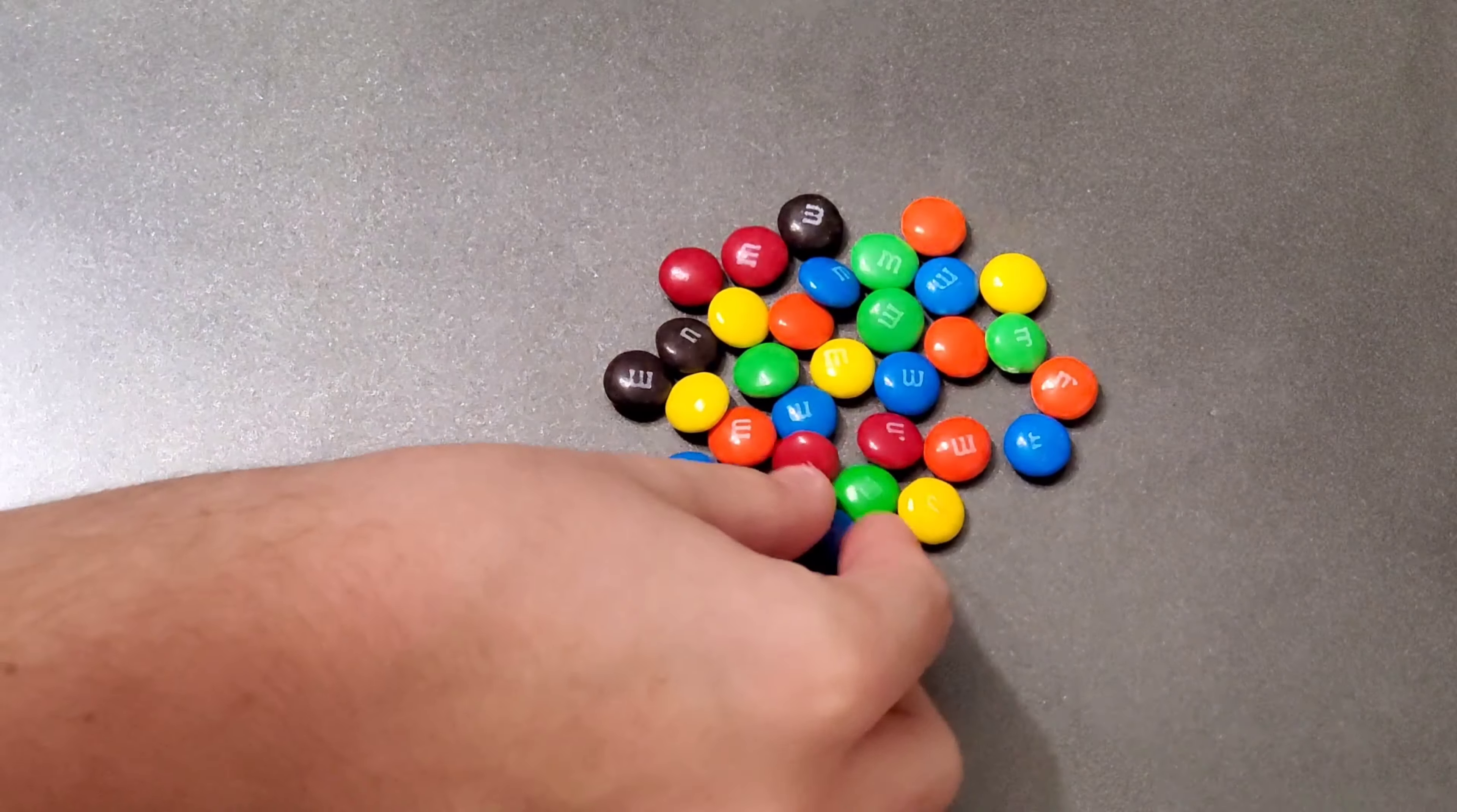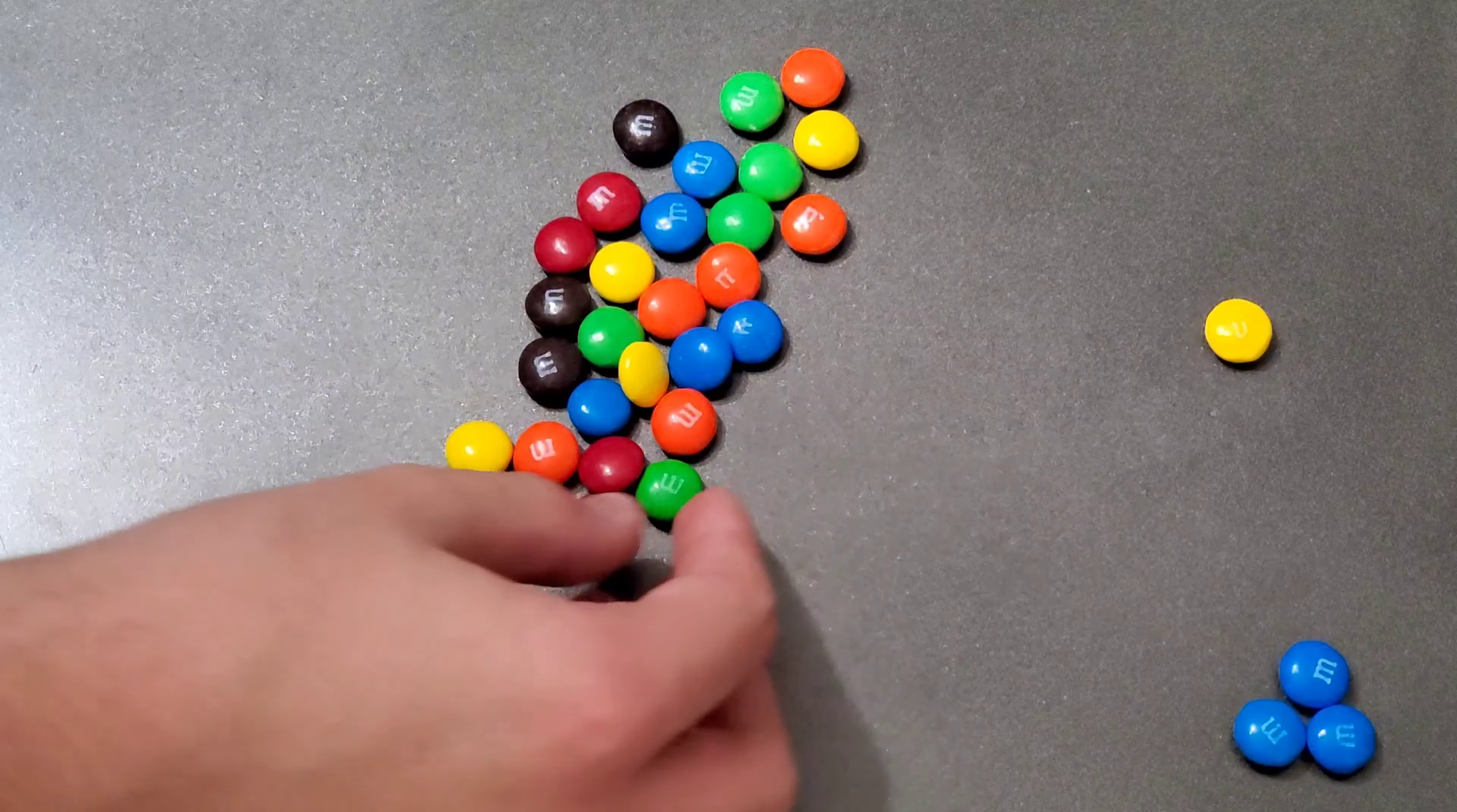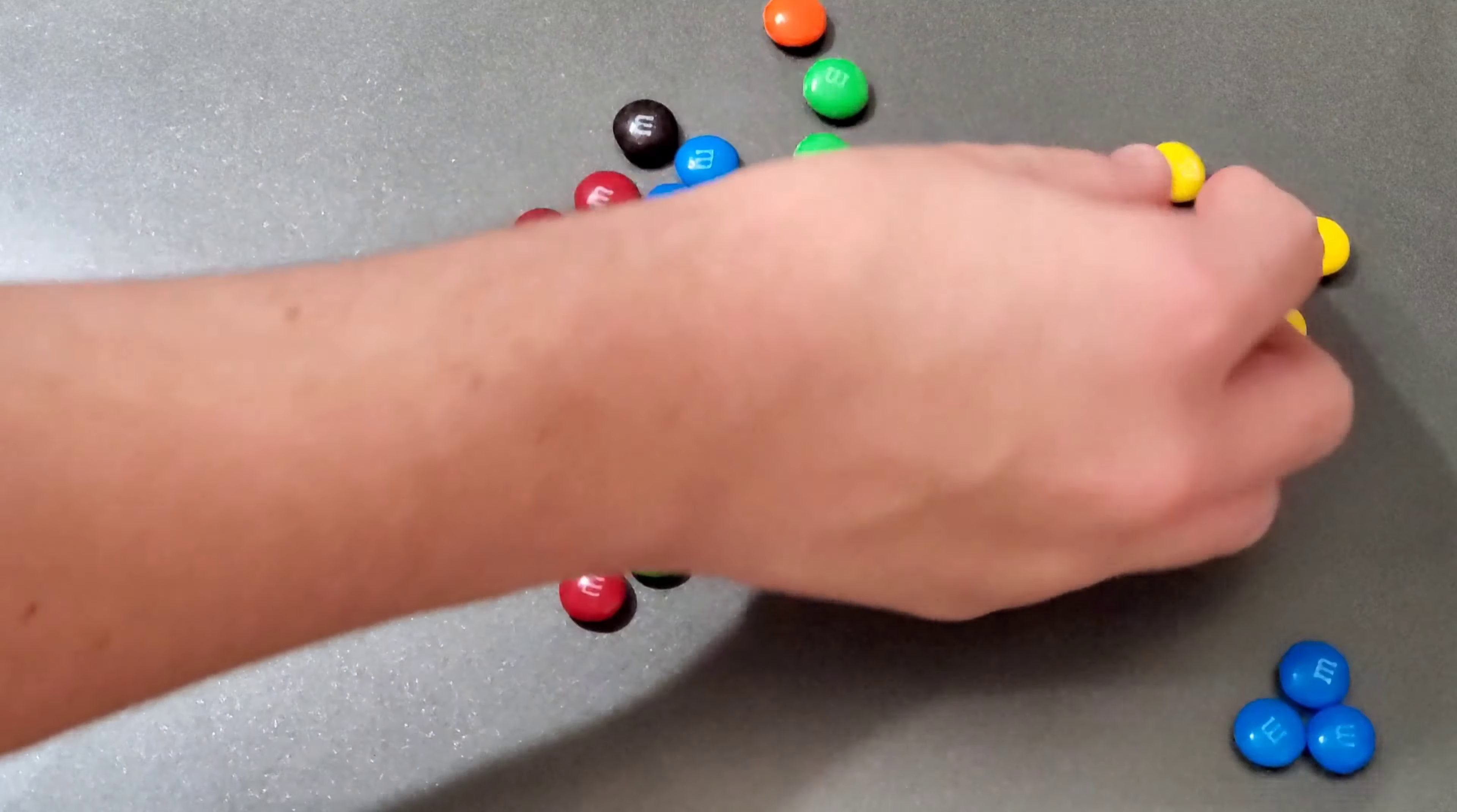First of all I'm going to start out with my favorite color, blue. So this is my favorite color right here, blue. Set these over to the side and then here's yellow, I can tell what yellow is. So I have a red-green colorblindness and I'll just be sorting the M&Ms. So this is obviously yellow, yellow.